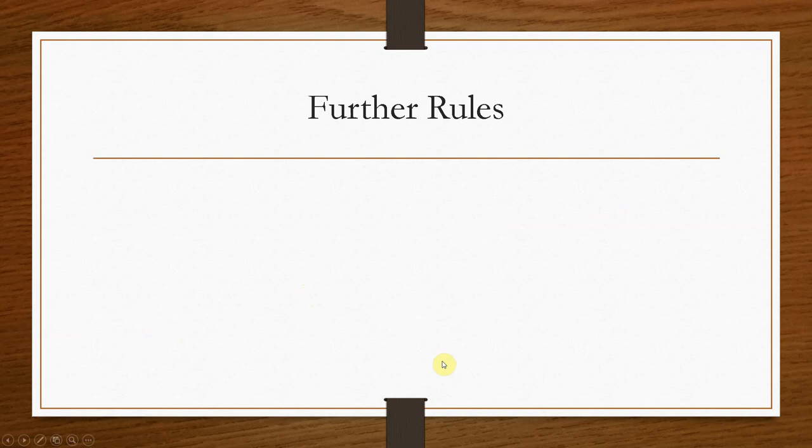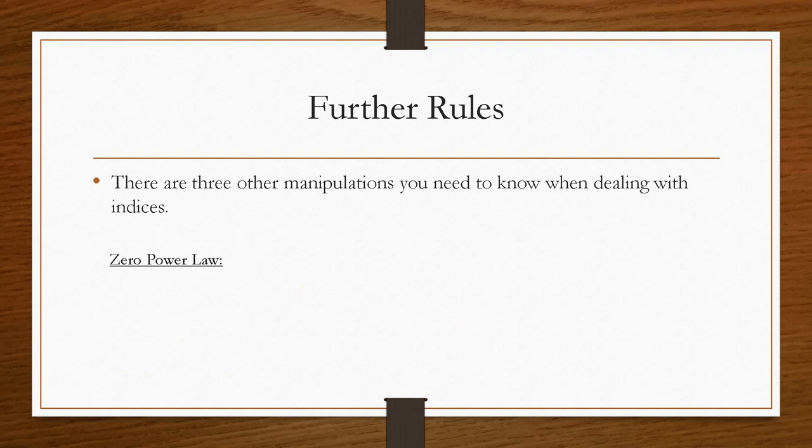Now, there are three other manipulations that you need to know. The zero power law: anything to the power 0, whether it be a letter, whether it be a number, or a fraction, or anything, anything to the power 0 is always 1. So if you see a to the power 0, it's 1. If you have 3,295 to the power 0, it's 1.